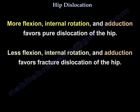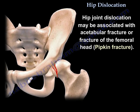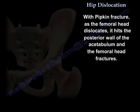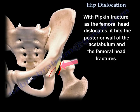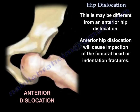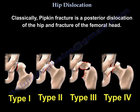More flexion, internal rotation, and abduction favors pure dislocation. Less flexion, internal rotation, and abduction favors fracture dislocation of the hip. Hip joint dislocation may be associated with an acetabular fracture or femoral head fracture, which is called a Pipkin fracture. In a Pipkin fracture, as the femoral head dislocates, it hits the posterior wall of the acetabulum and the head fractures. This differs from anterior hip dislocation, which may cause impaction or indentation fractures of the femoral head. Classically, Pipkin fracture is a posterior dislocation of the hip with fracture of the femoral head, and there are four types of Pipkin.